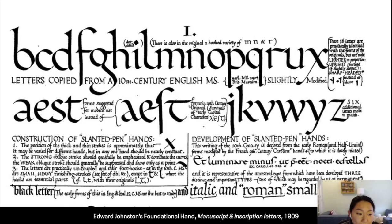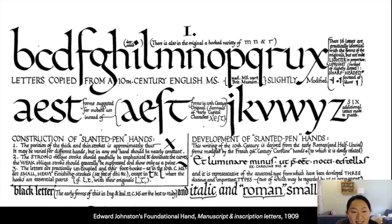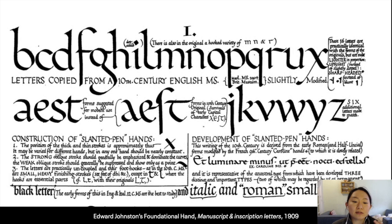Edward Johnston, who you may remember from his London Underground types, was a very big figure in the revival of the calligraphy movement. He also researched medieval and Renaissance techniques, and was very much inspired by William Morris. He made this very famous foundational alphabet based on a manuscript called the Ramsey Psalter. He's very influential because he taught a lot of students, and his book — Writing, Illuminating, and Lettering — was very inspiring for people to learn the craft of letters, handwriting, and calligraphy.